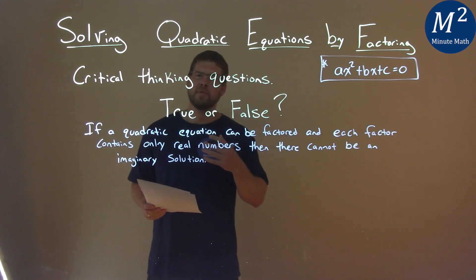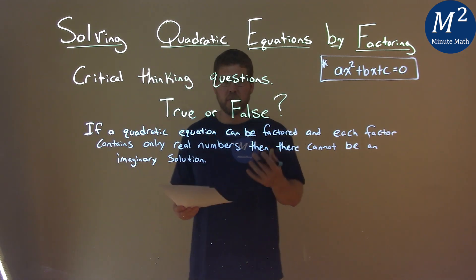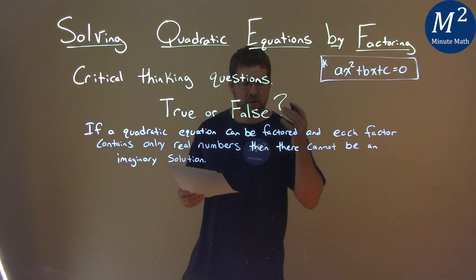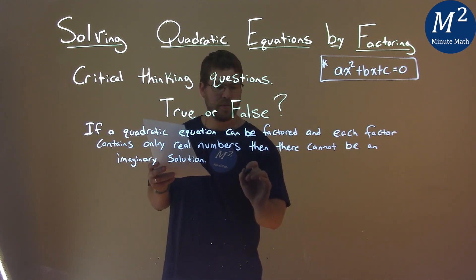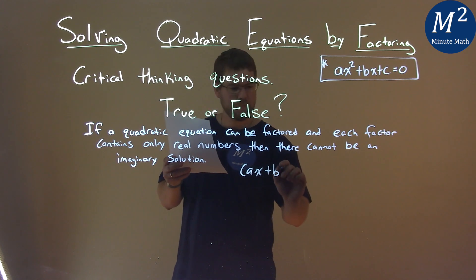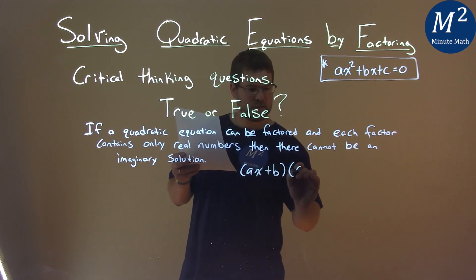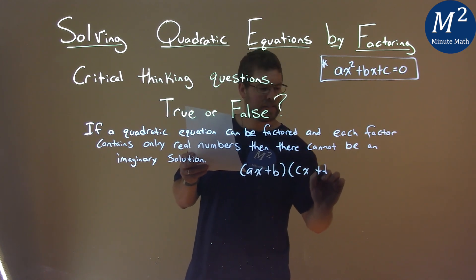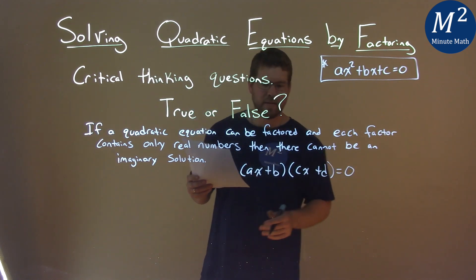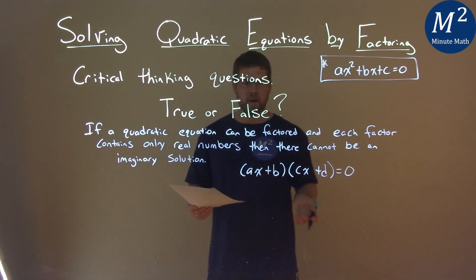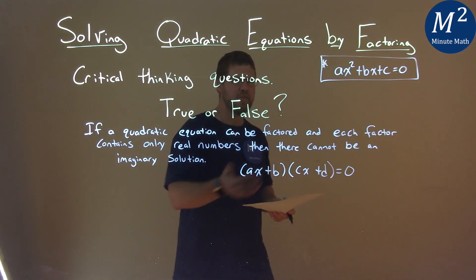Well, what do we know about factoring quadratics? They said it can be factored, so that means it has to be in some form like this: AX plus B, and then CX plus D, and then let's say it's equal to zero or some number, meaning it's in factored form now.